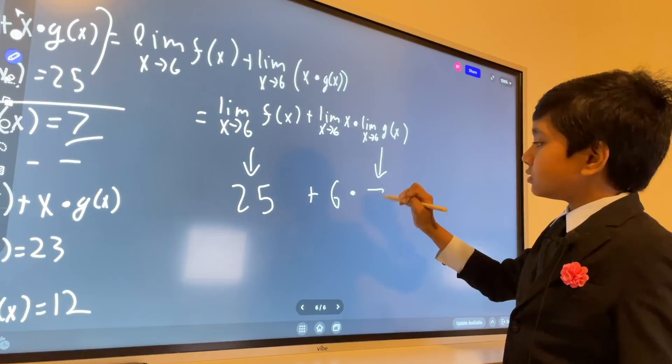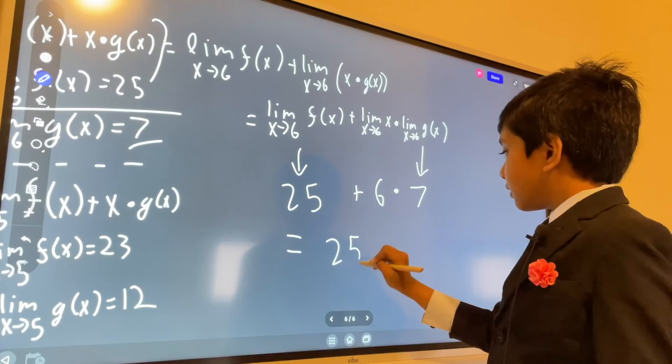So now we use PEMDAS to get this formation: 25 plus 42, which brings us to a grand answer of 67.